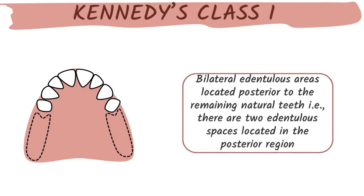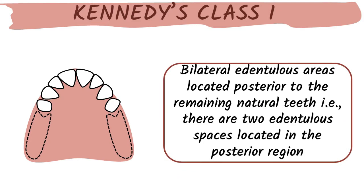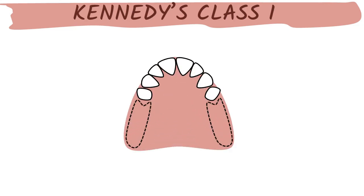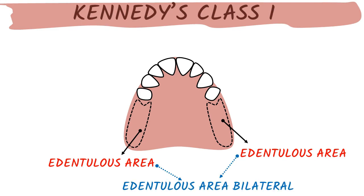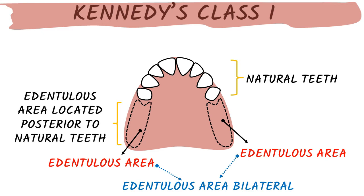Kennedy's Class 1 is defined as bilateral edentulous areas located posterior to the remaining natural teeth. That means there are two edentulous spaces in the posterior region. As you can see in the figure, anteriorly we have natural dentition and posteriorly we have bilateral edentulous areas — that is why it is called Kennedy Class 1.